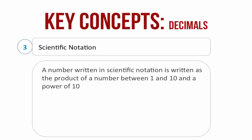Scientific notation. A number written in scientific notation is written as the product of a number between 1 and 10 and a power of 10. For example, 487 can be written as 4.87 into 10 to the power of 2. The decimal has been placed two places from the right, therefore the power of 10 is plus 2. The number of places that the decimal shifts determines the power of 10. When the decimal shifts from right to left, the power of 10 is positive.